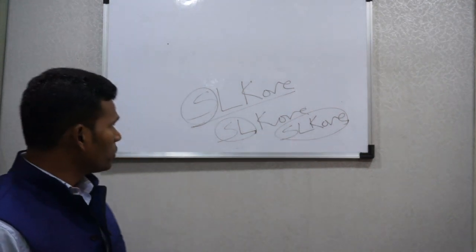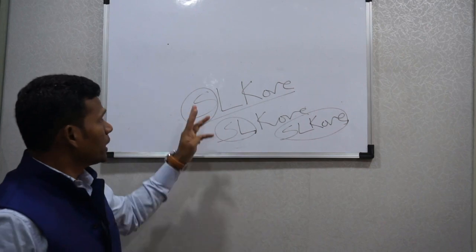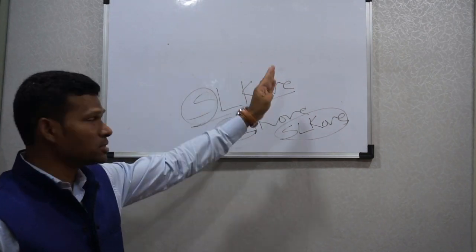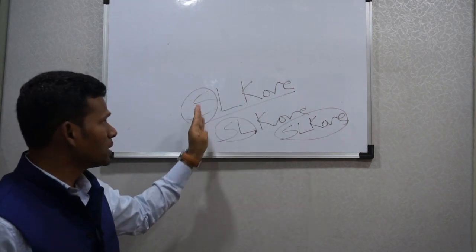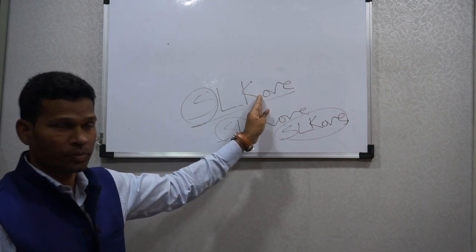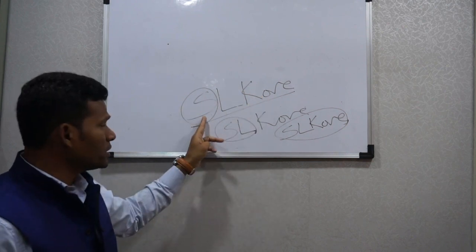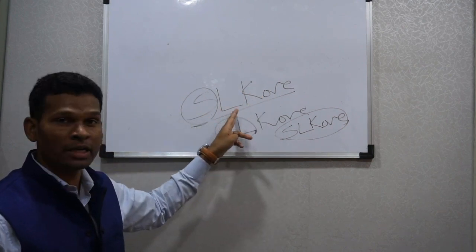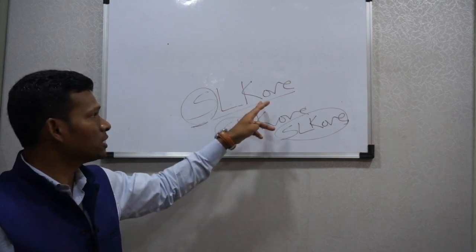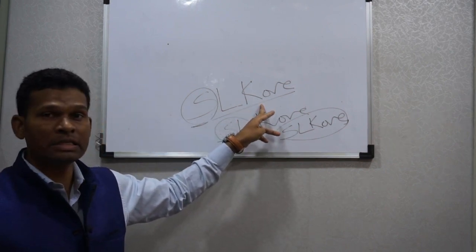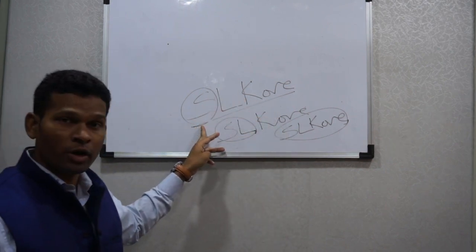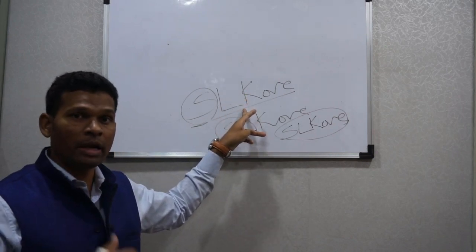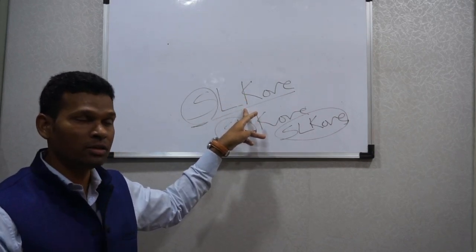Before that, I would like to tell you that the signature has three parts: first, middle, and third. In the first part, the person may write their own name; in the second, they will write their middle or father's name; in the third, they will write their surname. The first name is for the person himself, and the middle name is for himself and his father.